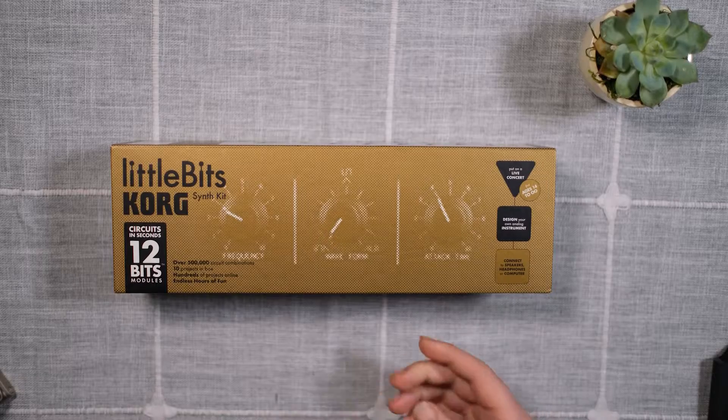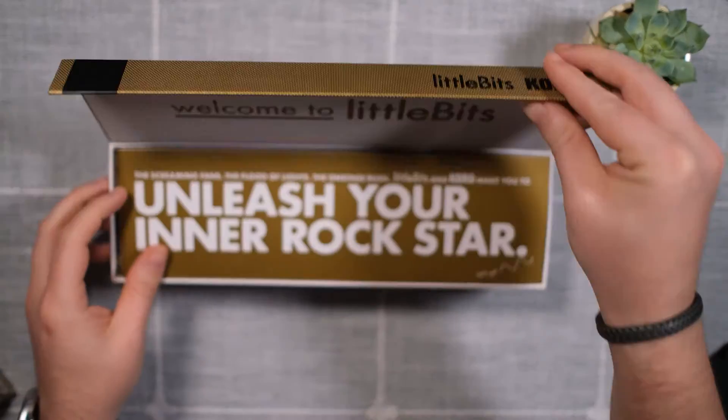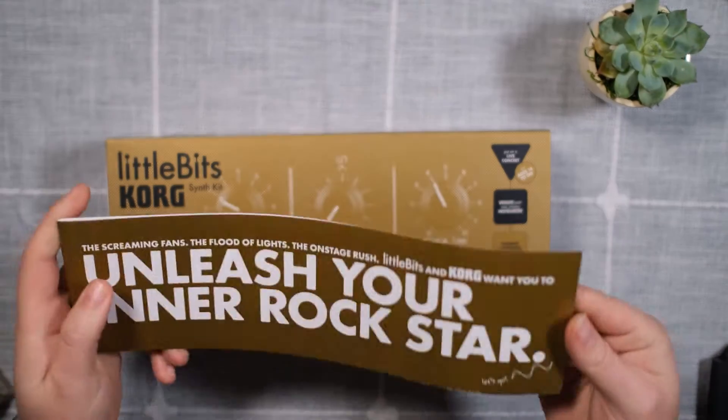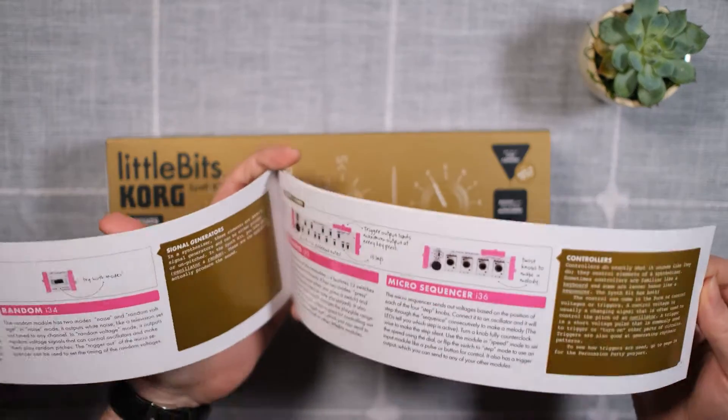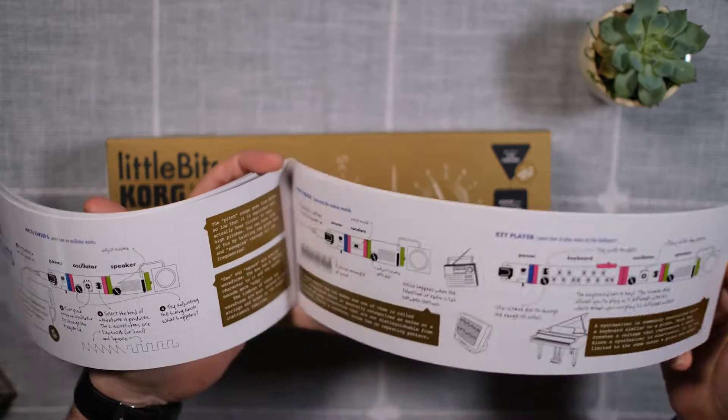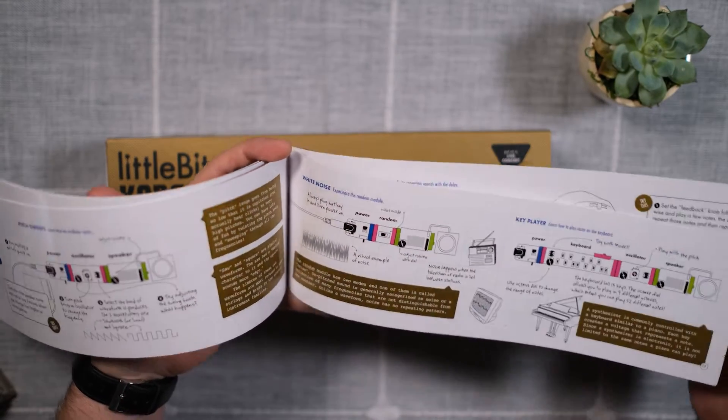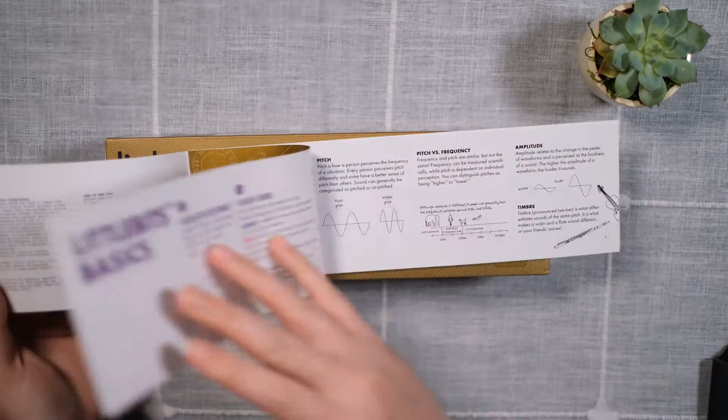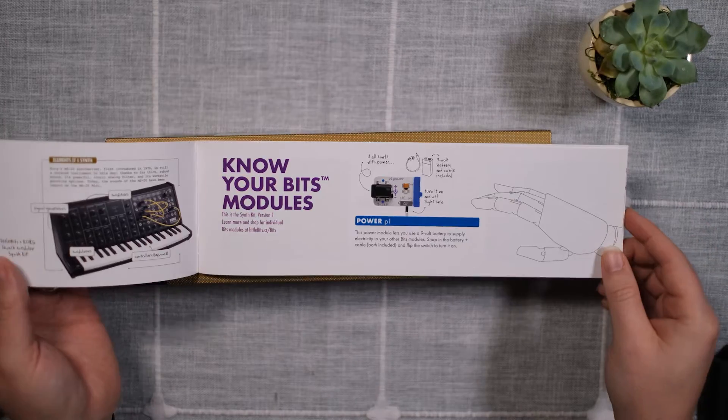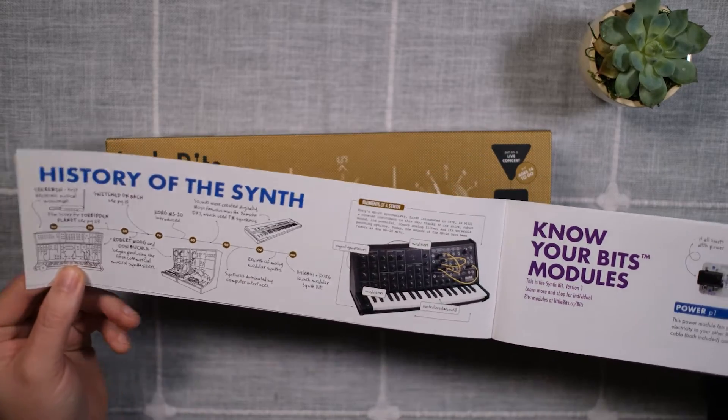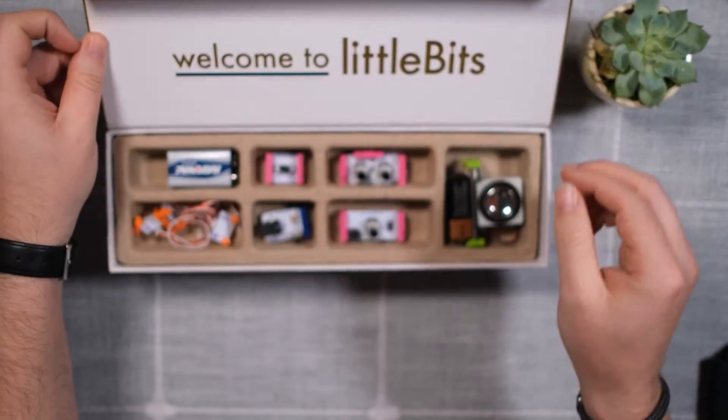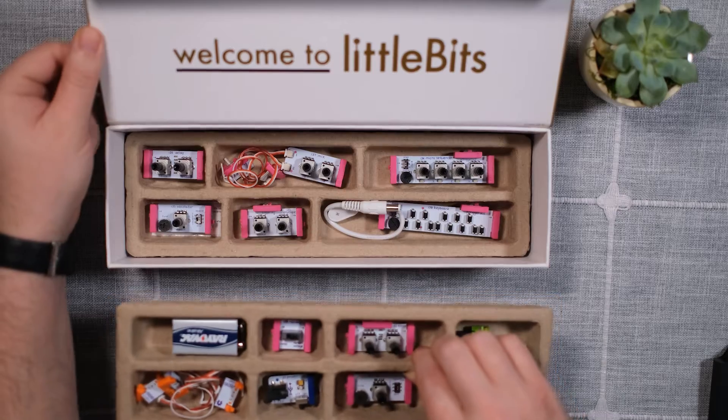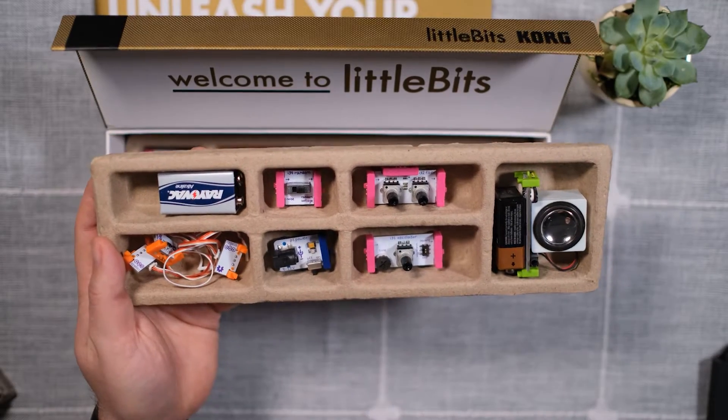So here's the box, and inside you will find this little booklet that will have a ton of different patches and different suggestions on how you can use it, and a little bit of the history of synths, and a little educational information for the user. Under that you have two trays of modules, and the 9V batteries included.